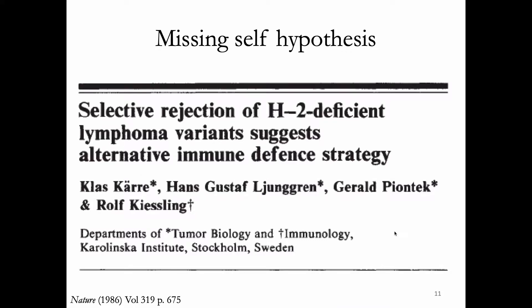NK cells and how they work were first really well described based on experiments done by Kärre that allowed us to understand something called the missing self hypothesis. I'm going to draw out some of his experiments. If you take incomplete notes on this experiment, it becomes really hard to understand later. There's one place where if you don't write the notes correctly, you'll look at it later and be confused, because sometimes the thing that dies is the mouse and sometimes the thing that dies is the tumor.